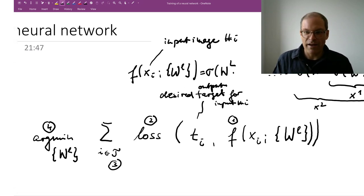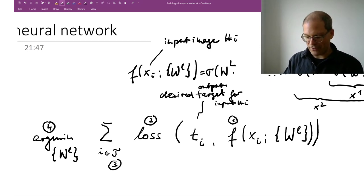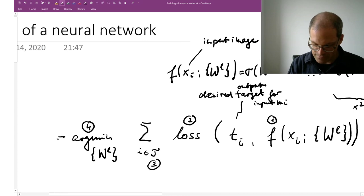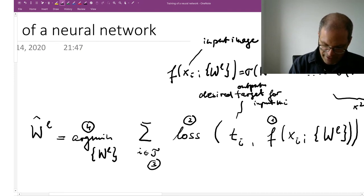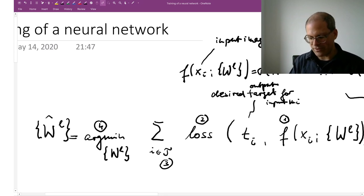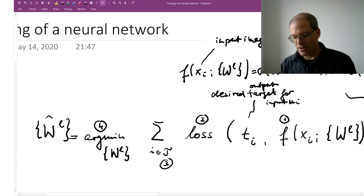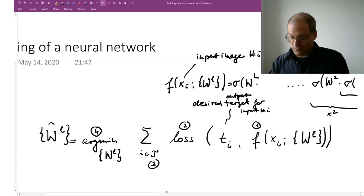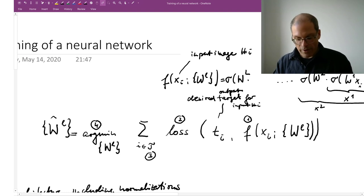Then at test time, well I just use my neural network with the parameters that I found. This gives me a set of optimal parameters. I could put a star or a hat or something. This is the result of my optimization procedure, these optimal parameters, and these are the parameters that I'm then going to use at test time to process any input.